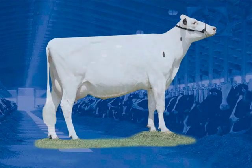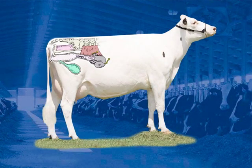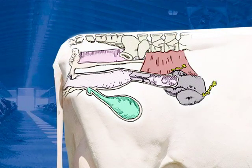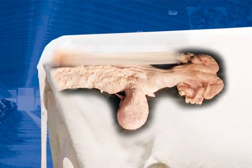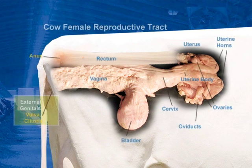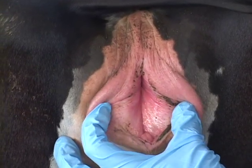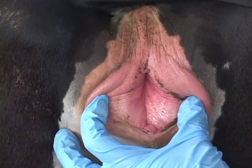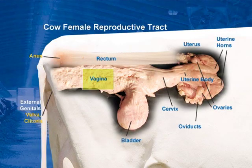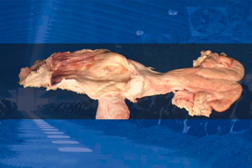Reproductive anatomy of the cow. In order to understand the proper insemination technique, it is very important to know the female reproductive tract. External genitals include the vulva, clitoris, and vestibular glands. The vagina is a cavity of strong muscular tissue that